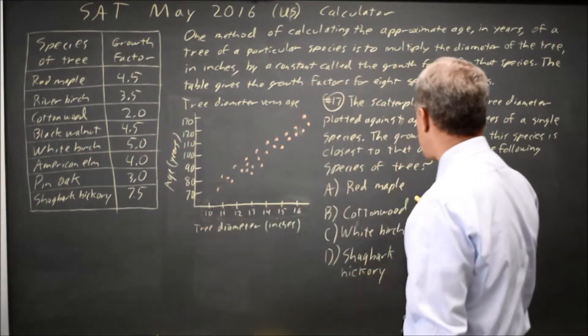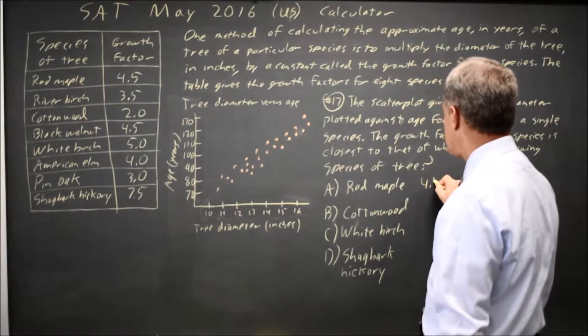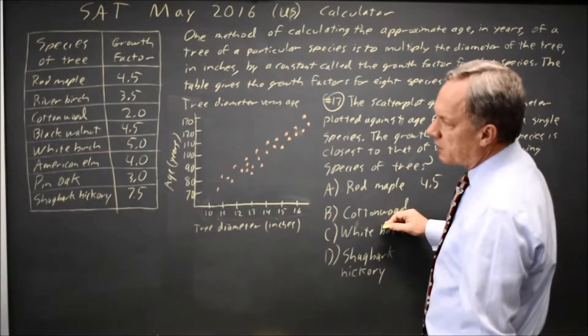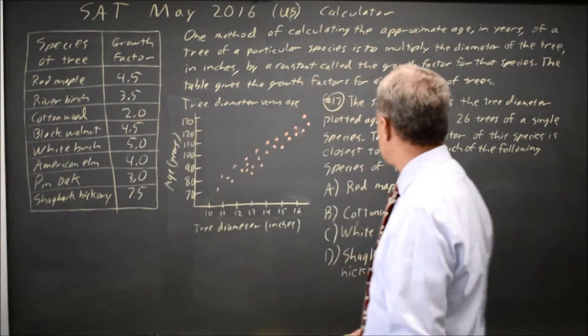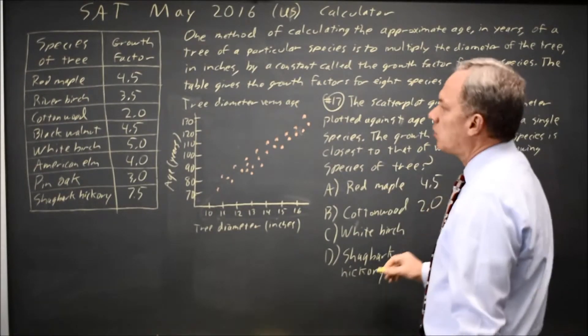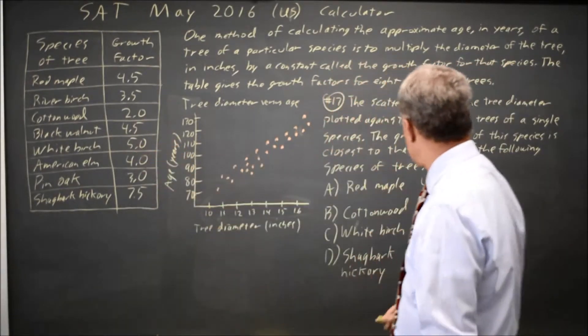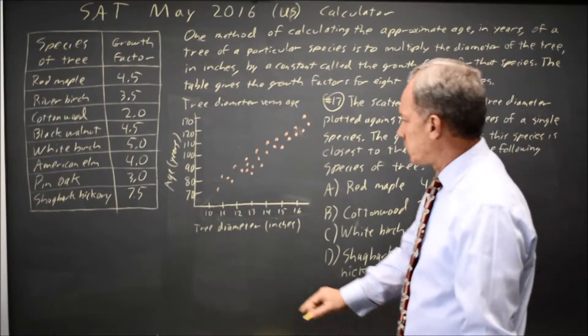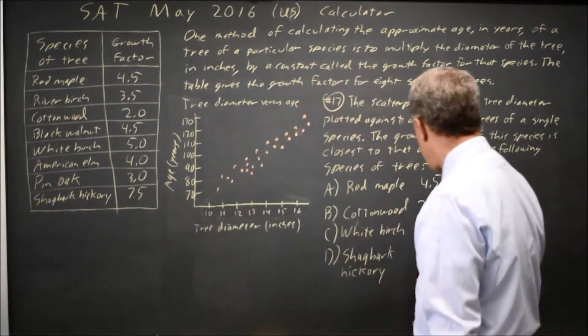The growth factor for red maple is the first one on the list, 4.5, cottonwood is 2.0, white birch is 5.0, and Shagbark Hickory, the last one, is 7.5.